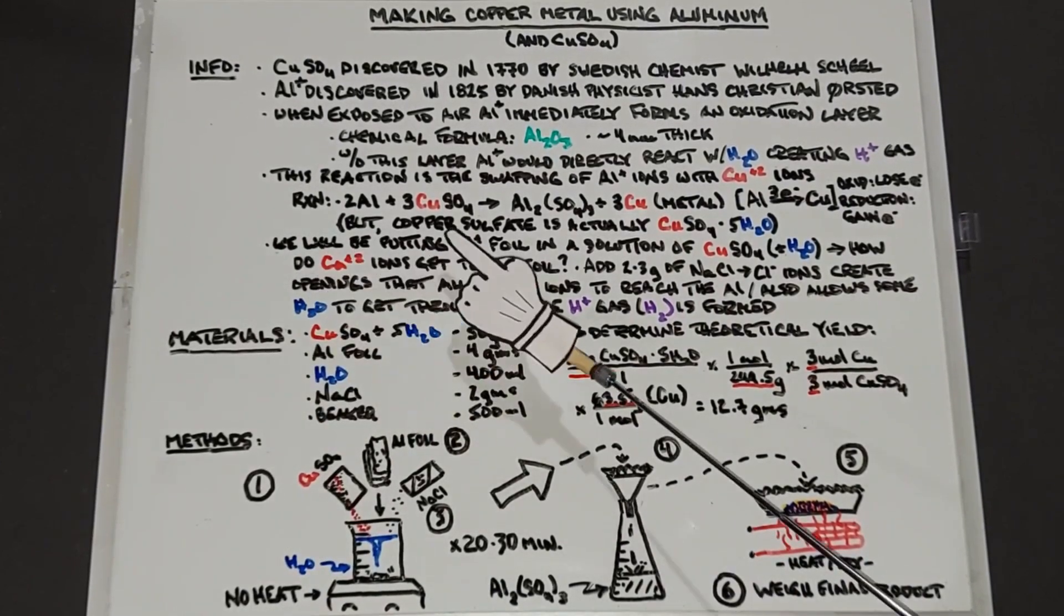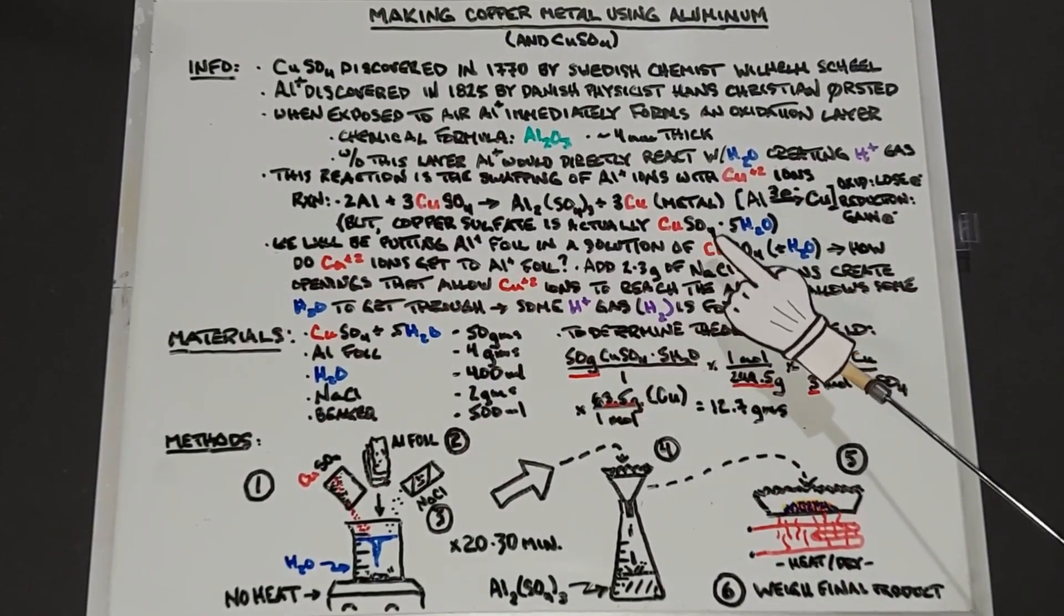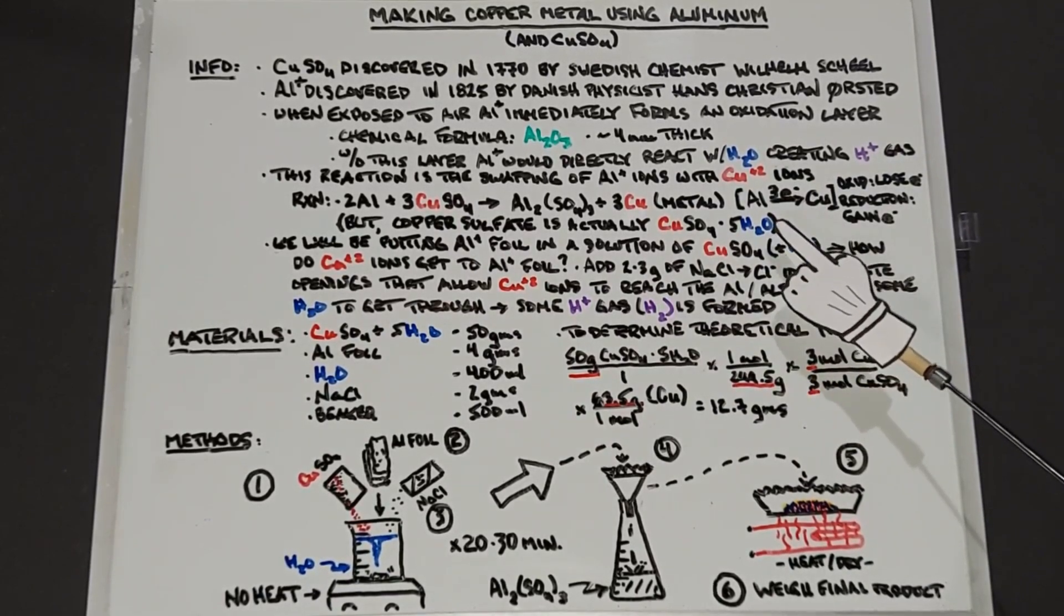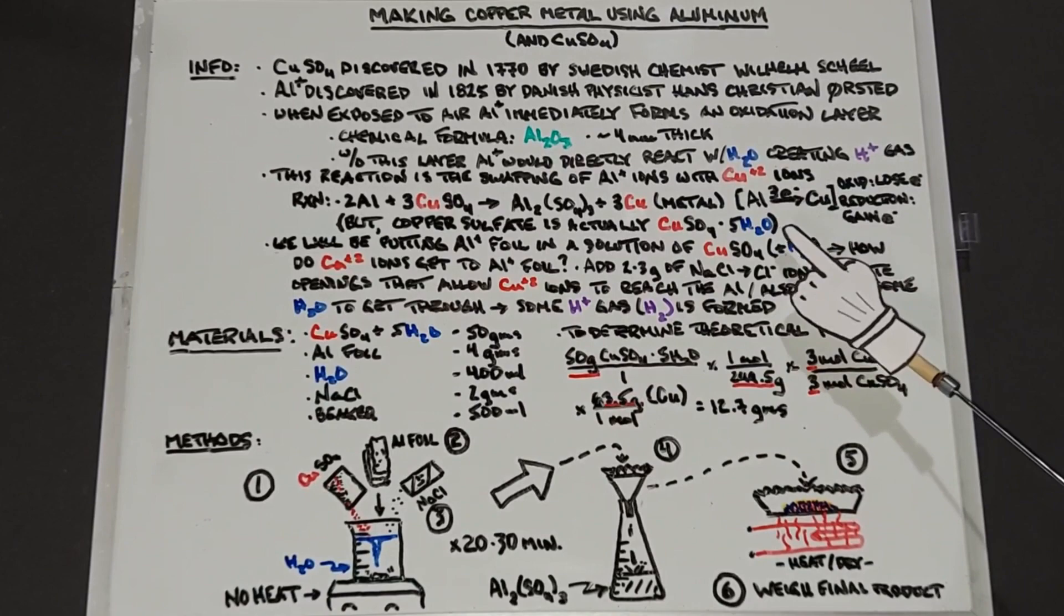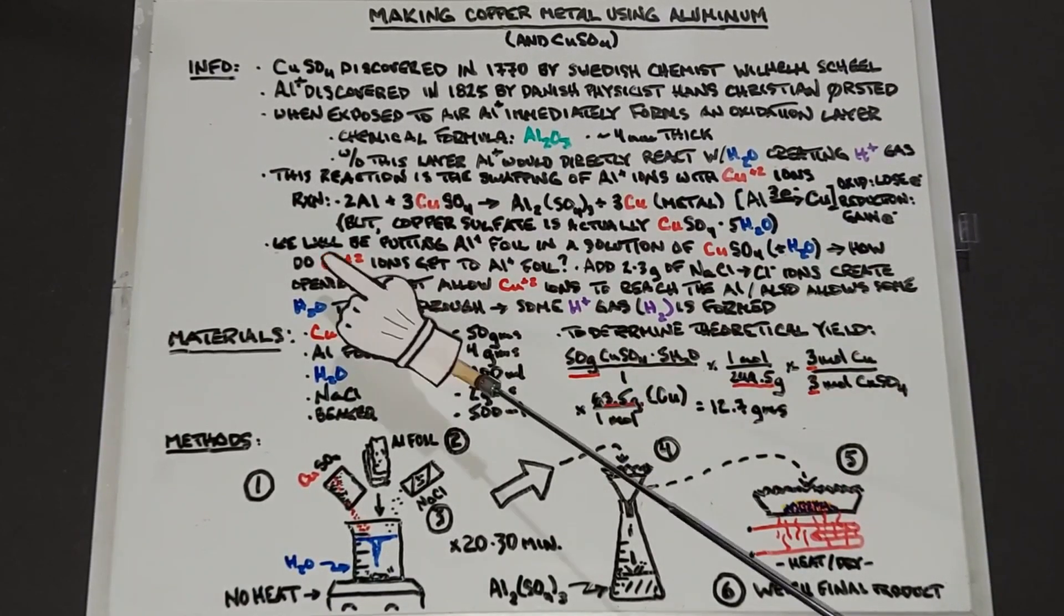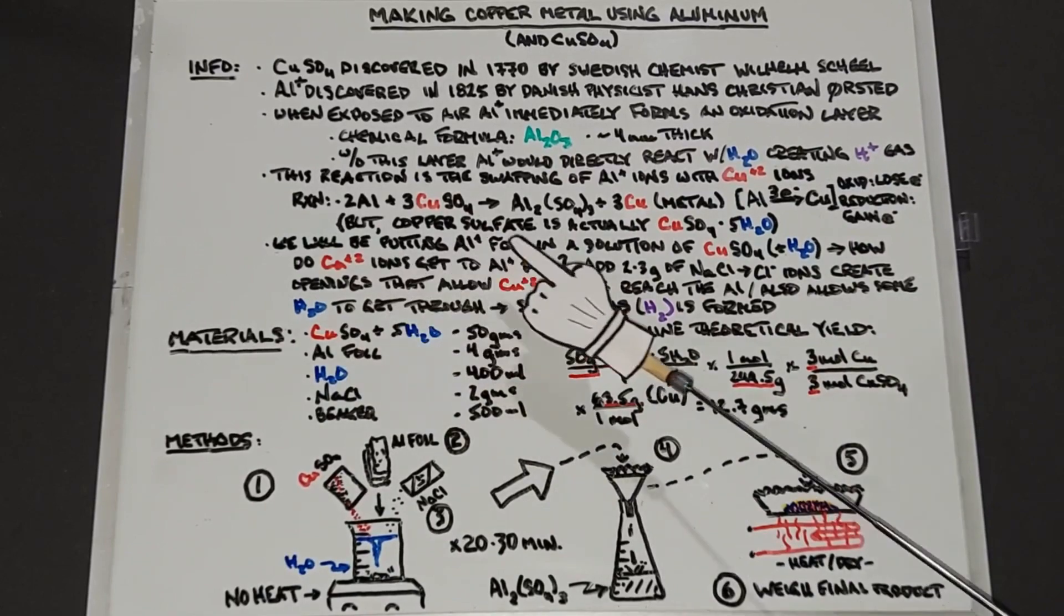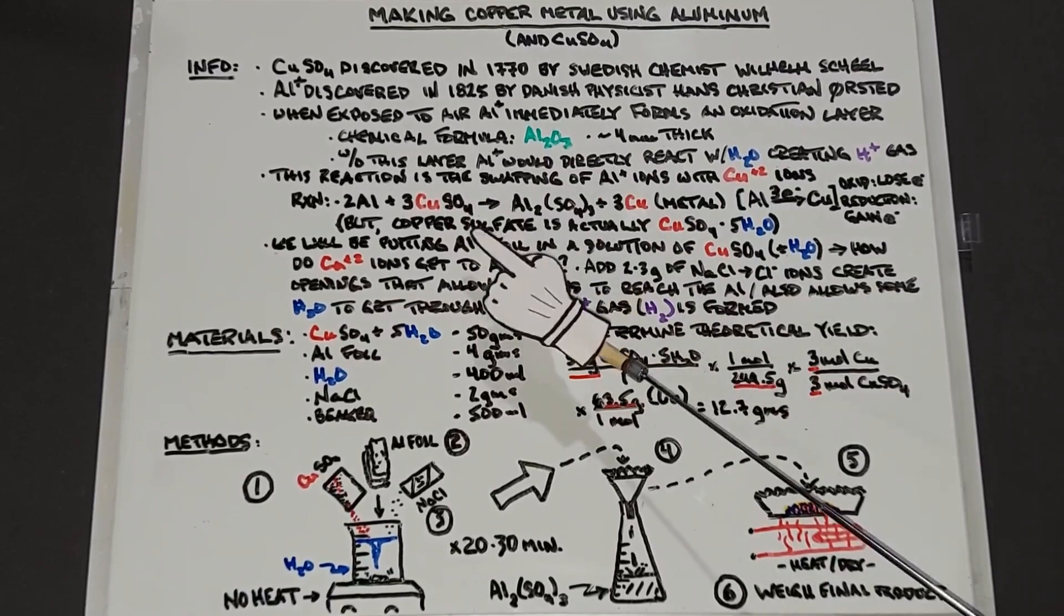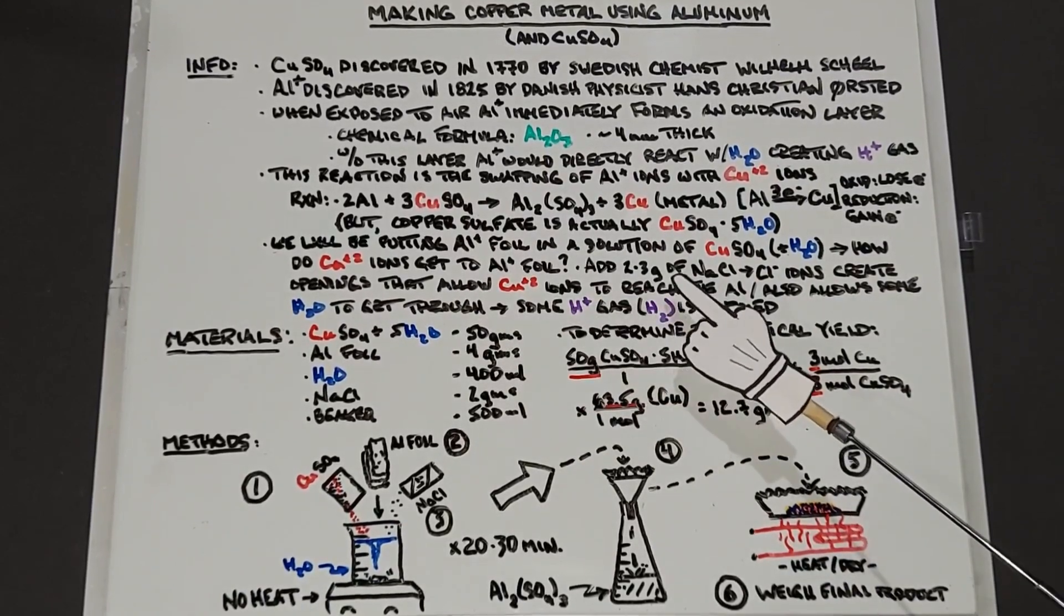In this experiment we'll be putting aluminum foil into a solution of copper sulfate pentahydrate plus additional distilled water. So we'll have a solution that's going to look a little bit blue, and we're going to drop our aluminum foil right in there. How do these copper ions get to the aluminum foil, considering the aluminum foil has this aluminum oxide layer on it?